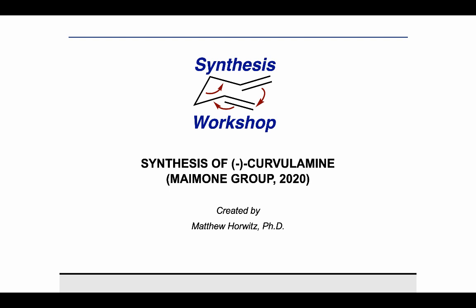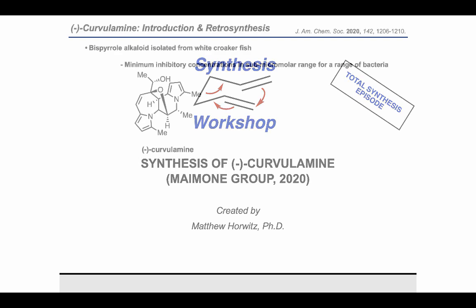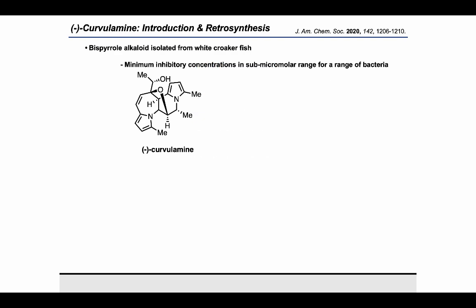Thank you for joining me today on Synthesis Workshop. Today is a total synthesis episode, and we'll be talking about the total synthesis of curvulamine by the Maimone group. Curvulamine is a bispyrrole alkaloid isolated from white croaker fish that is a potent antibacterial agent and has a very interesting structure.